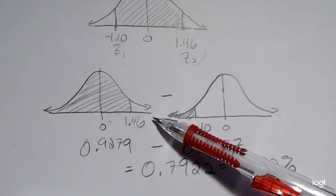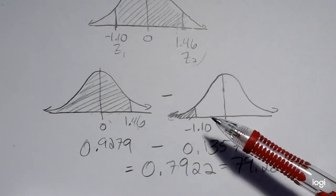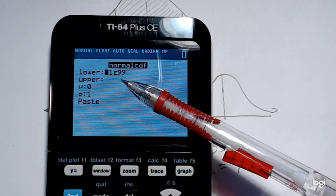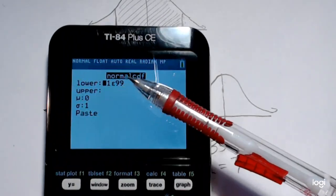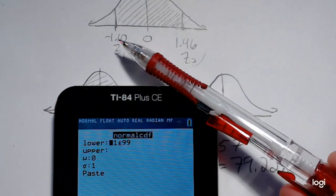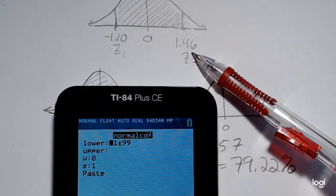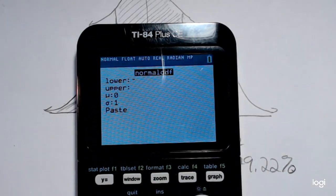With the calculator, however, you can do an in-between case, just by putting in your lower bound and upper bound. We have a lower bound of negative 1.10, upper bound of negative 1.46. So putting that in...